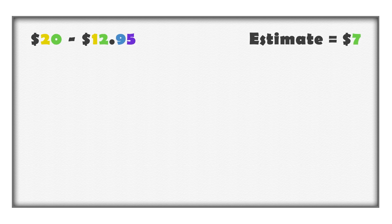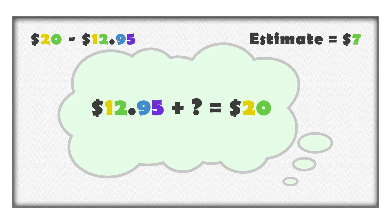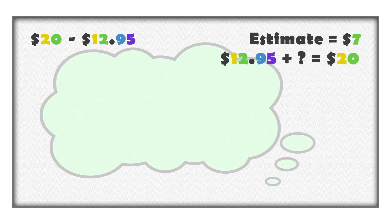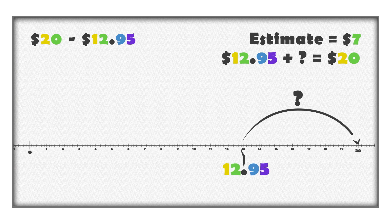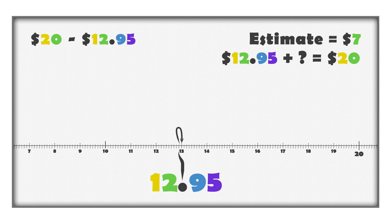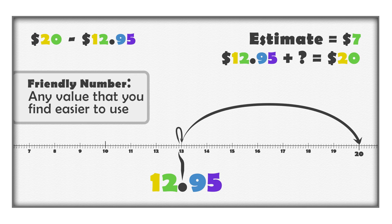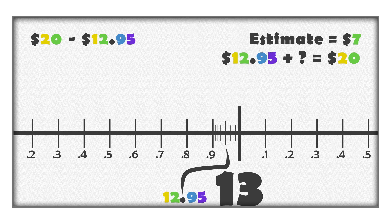How close is the difference to the estimate? It may be helpful to think of this as an addition question: how much do we need to add to $12.95 to make $20? Or, how far is it on the number line from $12.95 to $20? One way to do this is to add on to 95 cents first to get to a whole dollar — this is called adding to get a friendly number. A friendly number is any value that you find easier to use. We can add 5 cents, or 5 hundredths of a dollar, to make 13 whole dollars.